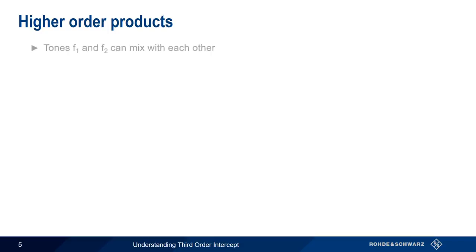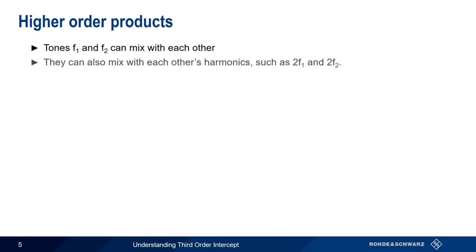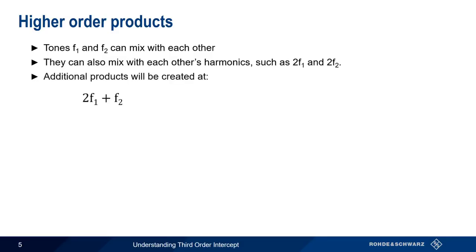Making this more complicated is the fact that not only will our two fundamental tones mix with each other, but they'll also mix with the harmonics generated by the device, such as 2F1 and 2F2, the second harmonics of F1 and F2. So we'll have additional intermodulation products at 2F1 plus F2, 2F1 minus F2, 2F2 plus F1, 2F2 minus F1, etc.